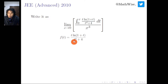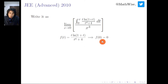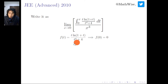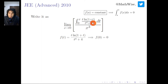Now let us analyze the function t times ln(1+t) over t to the power of 4 plus 4. If we plug in t equals 0, the value will be 0 — easy to check because t times ln(1+t) is 0, and the denominator is 4, so f(0) = 0. This means the integral from 0 to 0 will also be 0.